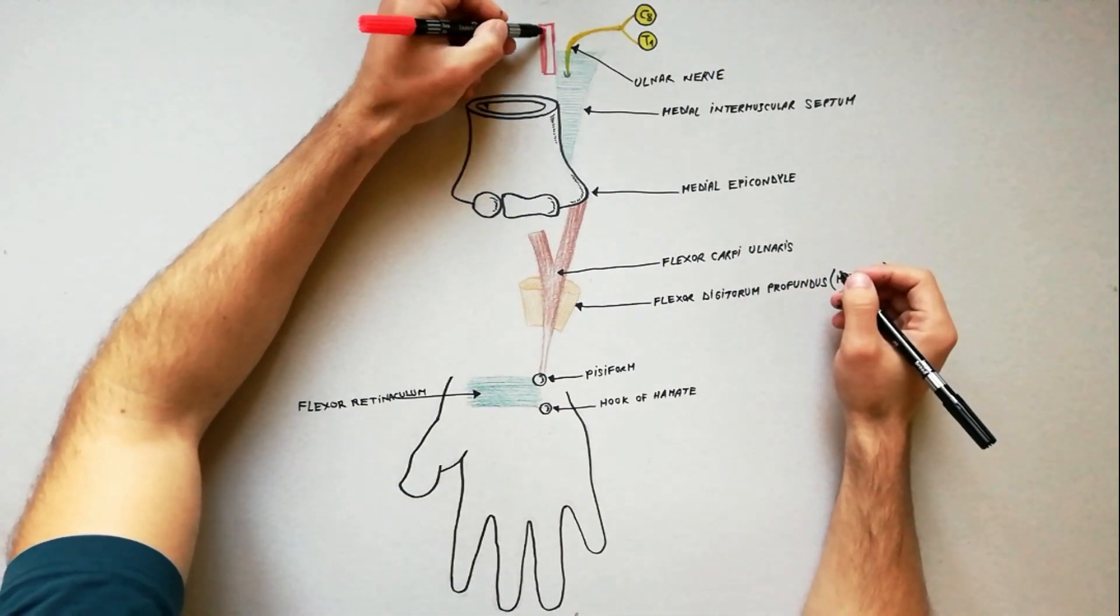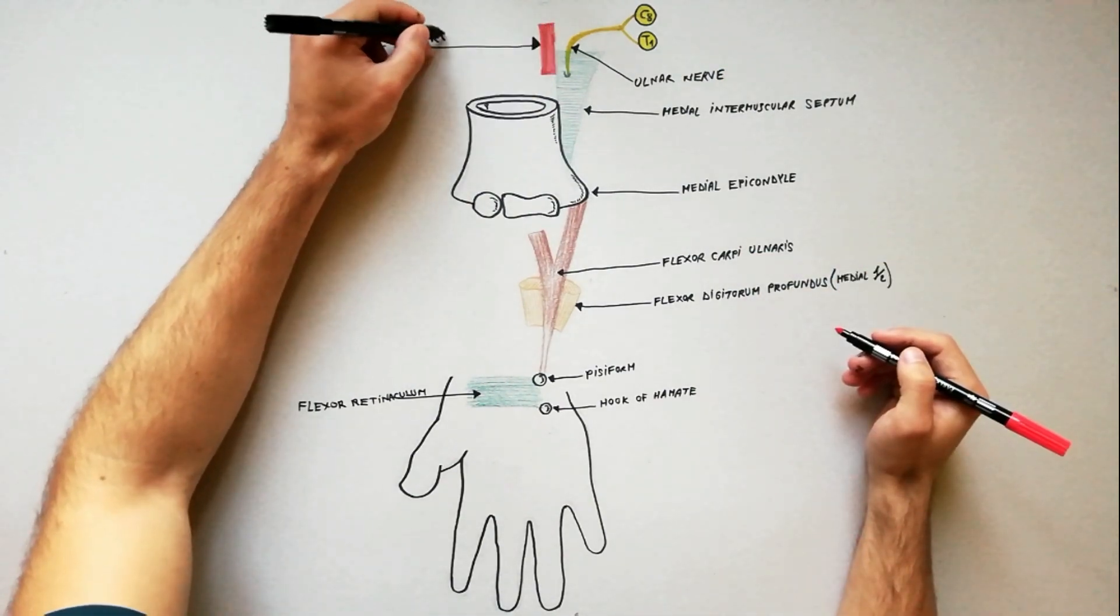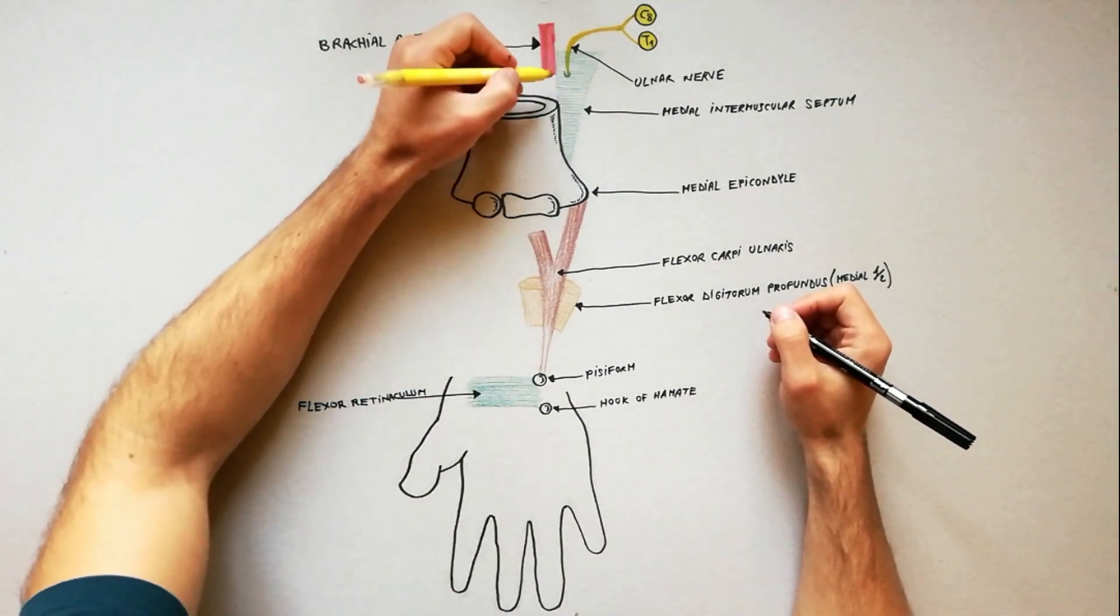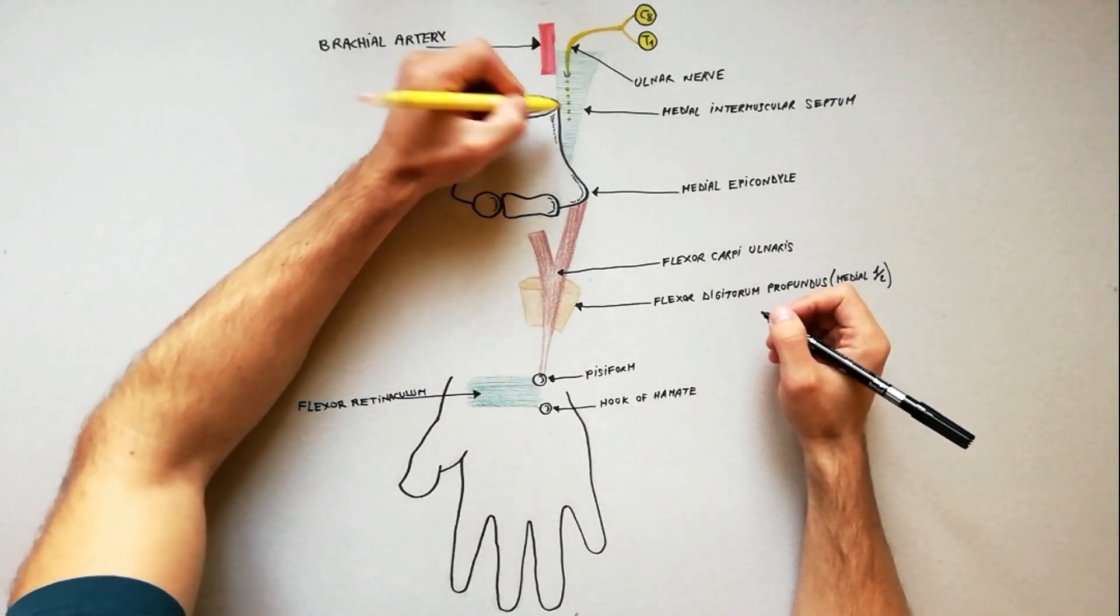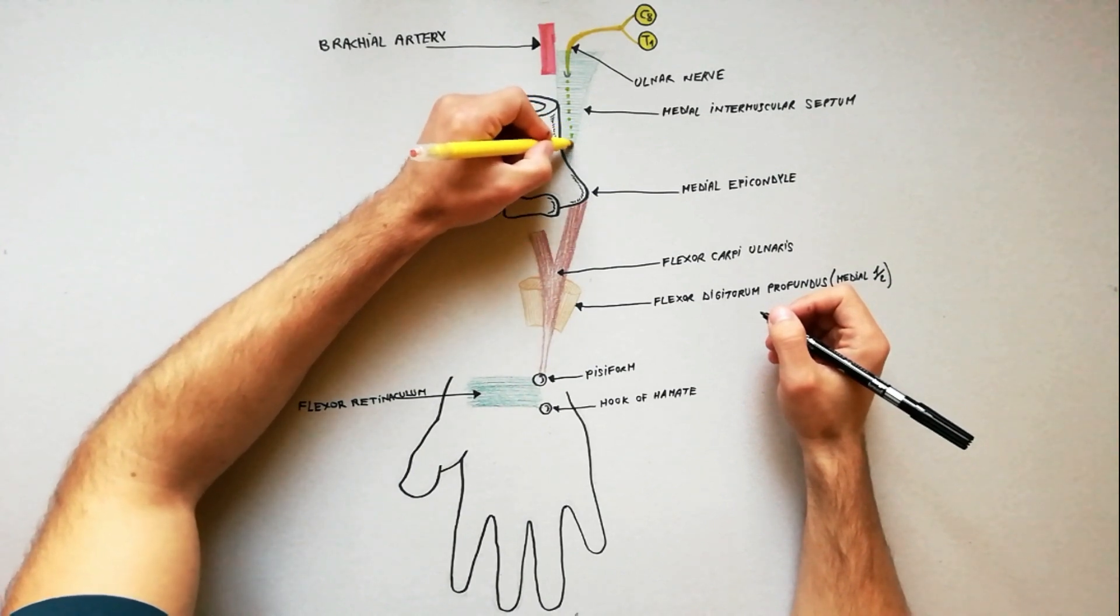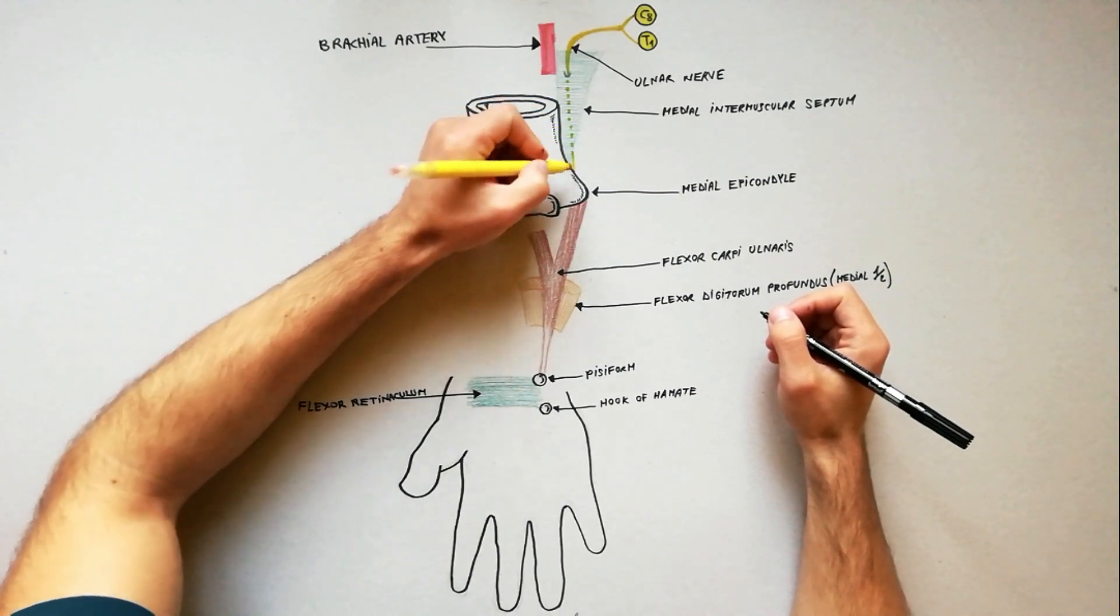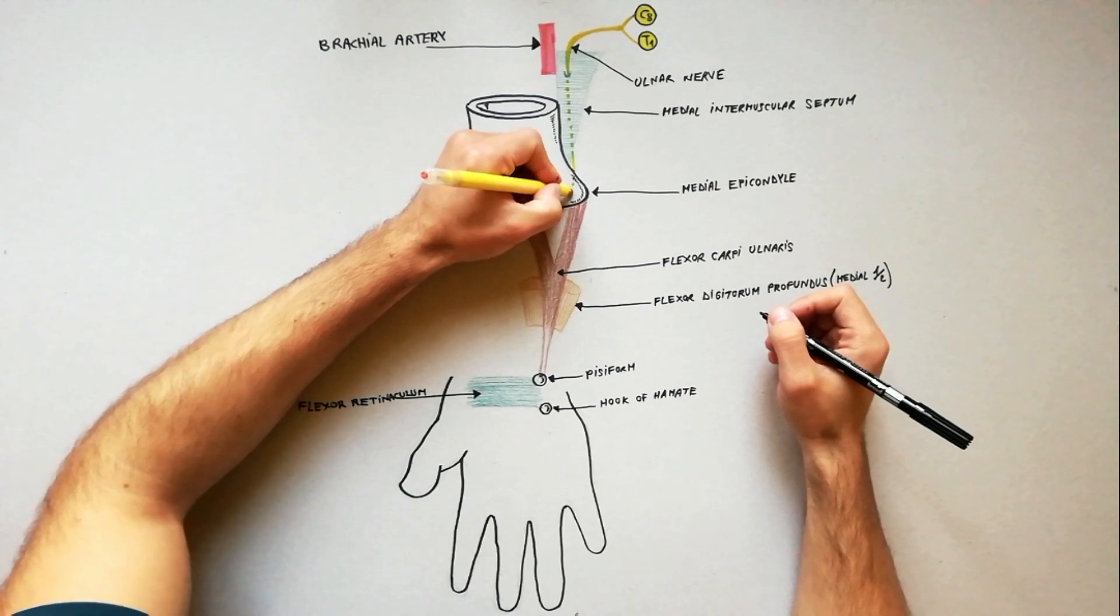In the arm, it runs distally along the medial side of the brachial artery up to the mid-arm, where it pierces the medial intermuscular septum to enter the posterior compartment of the arm and runs downwards to the back of the medial epicondyle of humerus.